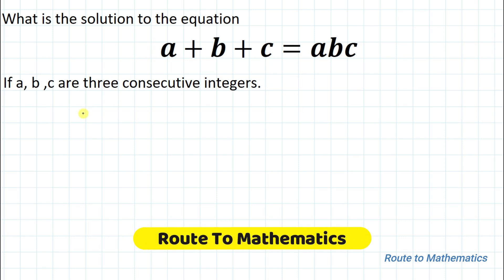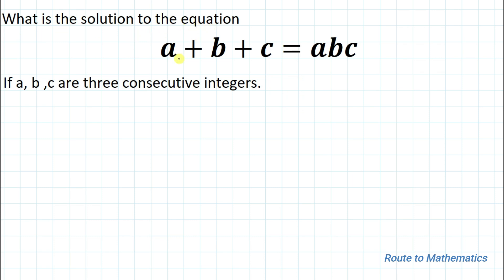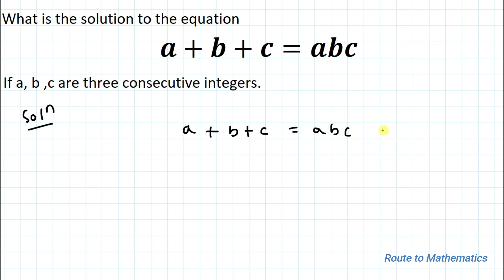Welcome to Root 2 Mathematics. In this video we are going to solve this interesting question: what is the solution to the equation a plus b plus c equals a·b·c, if a, b, c are three consecutive integers? We are asked to find the solution. Let's take this as equation 1.